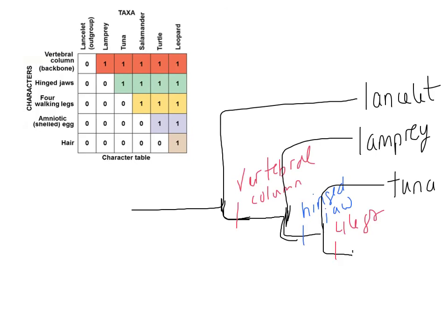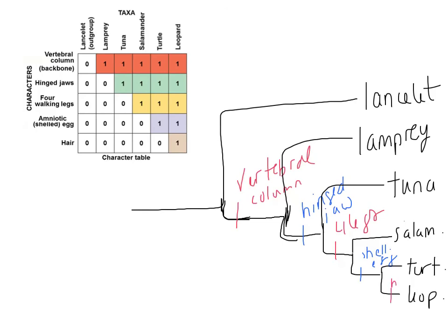The salamander has a hinged jaw, a backbone, and four walking legs. The tuna has a hinged jaw but not four walking legs, so that's another branch point — four walking legs. The salamander does not have a shelled egg, so it branches off there. Then the last characteristic is hair: the turtle doesn't have hair but the leopard does.